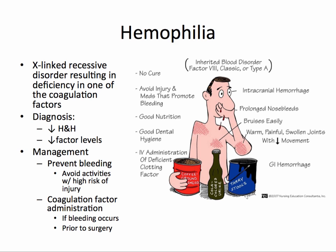Hemophilia is an X-linked recessive disorder resulting in a deficiency of one of the coagulation factors. It is diagnosed by conducting an assay of factor levels. In management, prevent bleeding by avoiding activities with a high risk of injury and administer coagulation factors — this should be done only if bleeding occurs or prior to surgery.